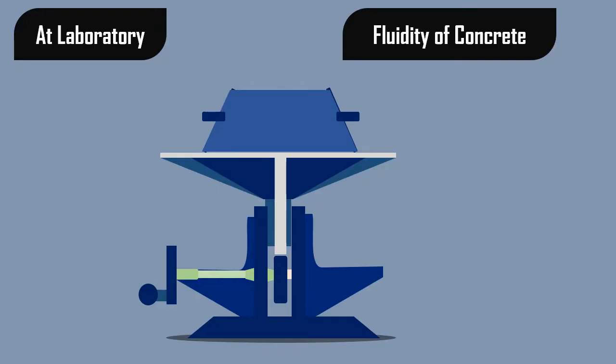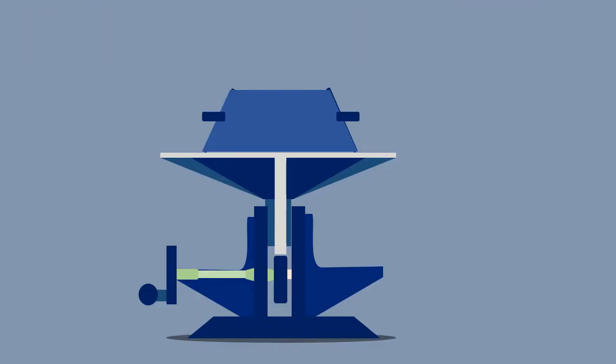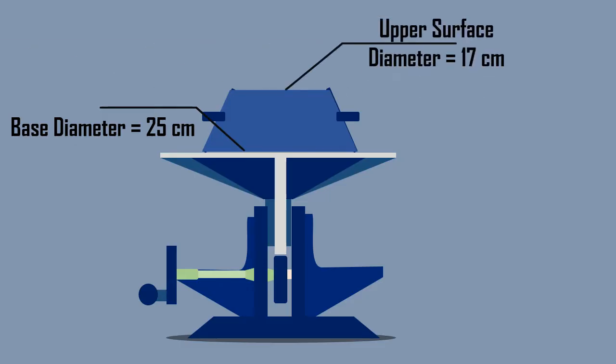The apparatus consists of a mold made of smooth metal casting in the form of a frustum of a cone with internal dimensions of 25 cm base diameter, 17 cm upper surface diameter, and height 12 cm.